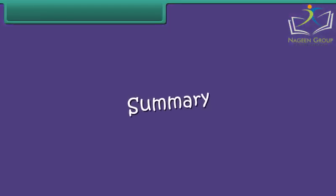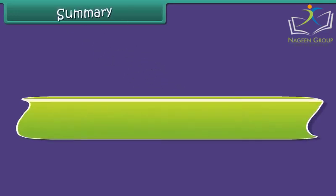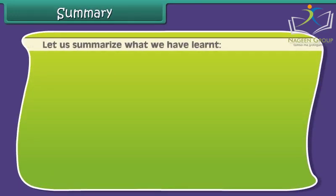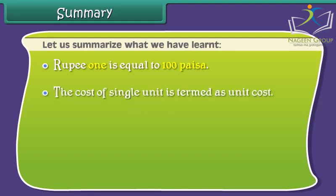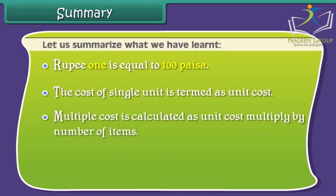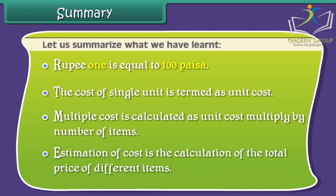Summary. Let us summarize what we have learnt. Rupee 1 is equal to 100 paisa. The cost of a single unit is termed as unit cost. Multiple cost is calculated as unit cost multiplied by number of items. Estimation of cost is the calculation of the total price of different items.